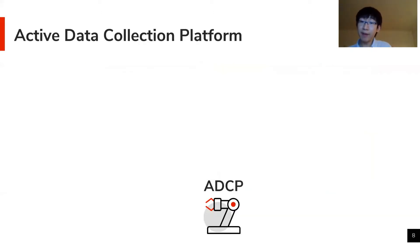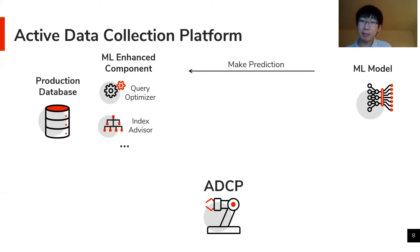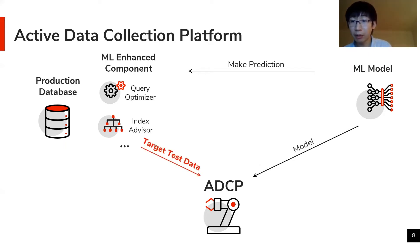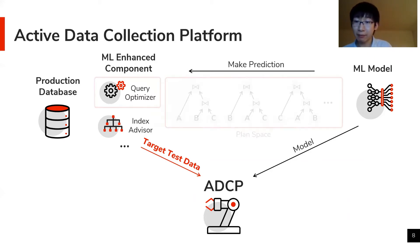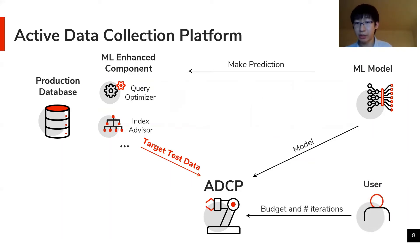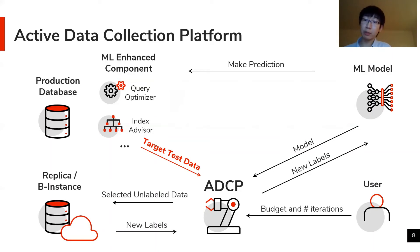To make this solution scalable to the various emerging ML applications in databases with different inputs, outputs, or ML models, we built a general active data collection platform that works for all these different ML applications for databases. In a deployed database, there can be one or many ML-enhanced components. If the model's prediction is not good — for example, the query chosen by the optimizer runs much slower than expected — the database sends the target test data and the ML model to the platform. Users of the platform can then specify a budget, and the platform selects a subset of unlabeled data from the target test data to send to replicas to get new labels and improve the model.